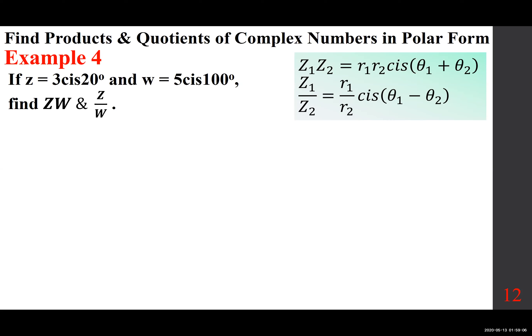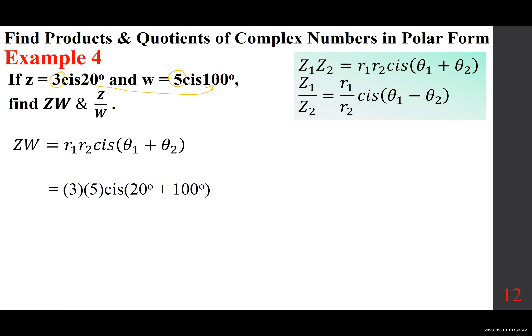We want to find their product. Z times W uses the first formula: R₁ times R₂ cis (theta₁ plus theta₂). R₁ is 3, R₂ is 5, so 3 times 5 equals 15, cis (20 degrees plus 100 degrees) equals 15 cis 120 degrees. And believe it or not, you're done.